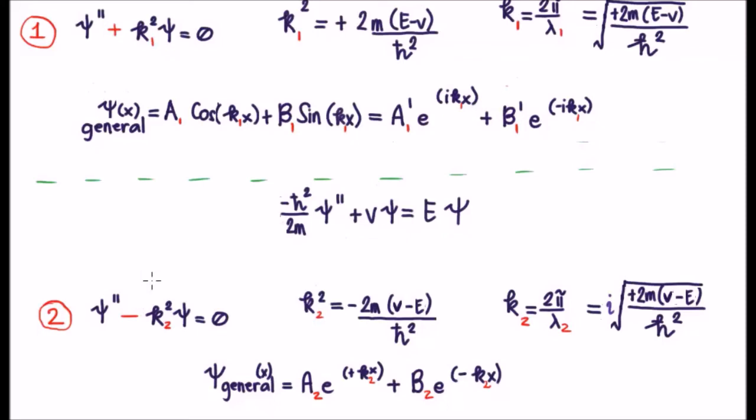And the general solution to this form of your time independent Schrödinger equation is a linear combination of real exponentials.